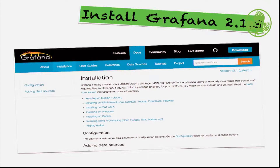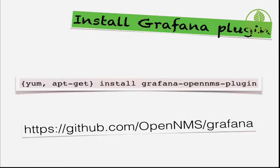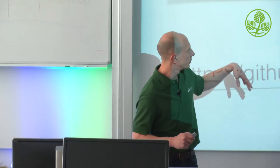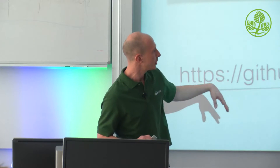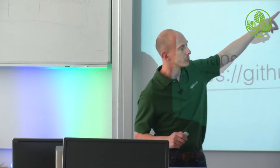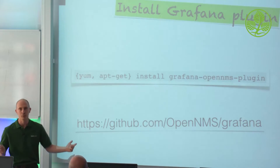Installing Grafana is also not really complicated. They have Debian packages — you just install it for your distribution or operating system. The Grafana OpenMS plugin is in our YUM and Debian repository, so you can use YUM or apt-get to install the Grafana OpenMS plugin, then restart Grafana and it's available. The source code for the plugin is also in our GitHub repository at github.com/openms/grafana.